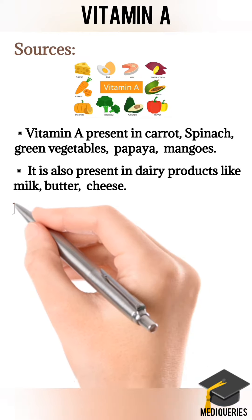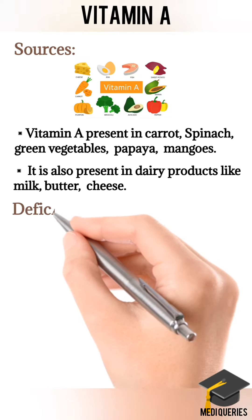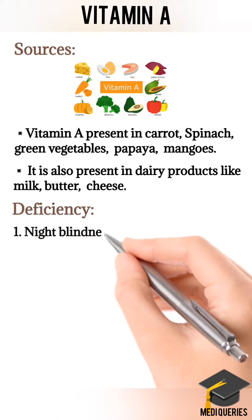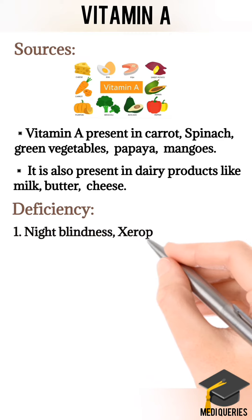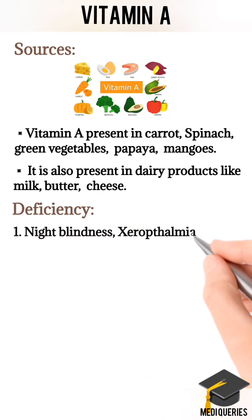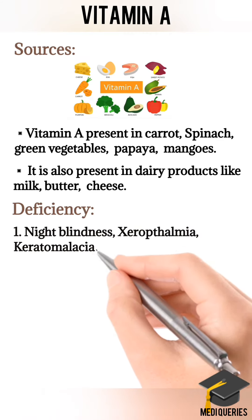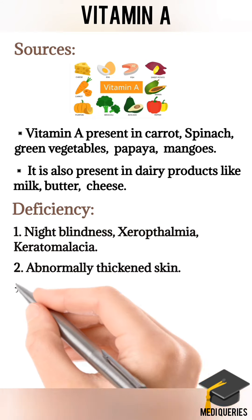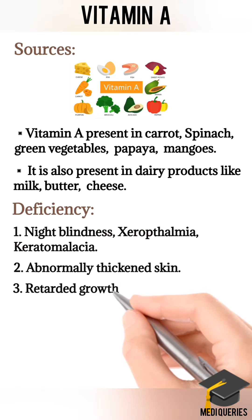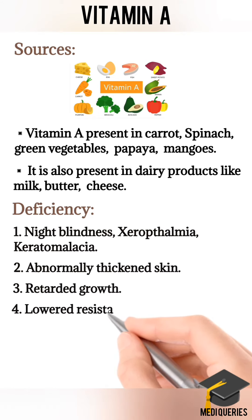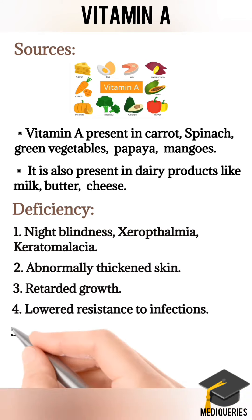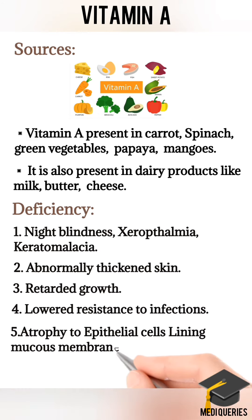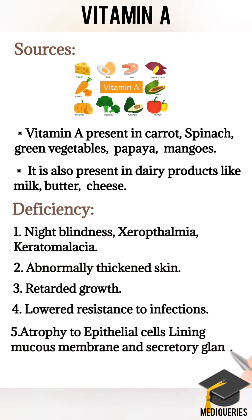Deficiency of Vitamin A leads to night blindness, xerophthalmia, and keratomalacia. Other deficiency effects include abnormally thickened skin called keratosis, retarded growth, low resistance to infection, and atrophy of epithelial cells lining mucous membranes and secretory glands.